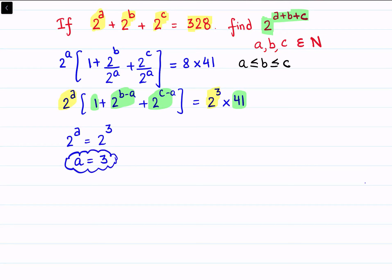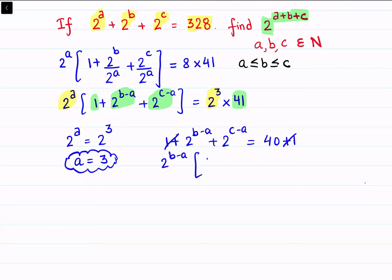Now comparing the odd terms: 1 plus 2^(b-a) plus 2^(c-a) equals 41. Writing 41 as 40 plus 1, the 1 cancels on both sides. Taking 2^(b-a) as common from the remaining terms gives 2^(b-a) times (1 plus 2^(c-a) / 2^(b-a)) equals 40, which we write as 8 times 5.